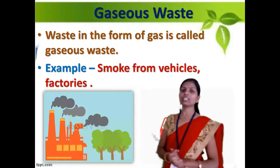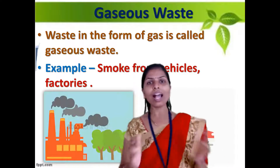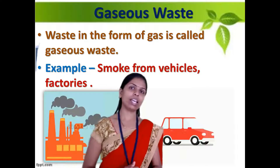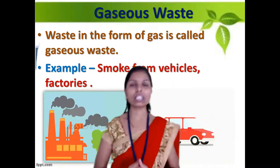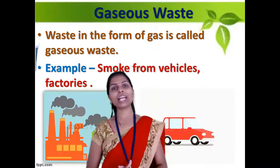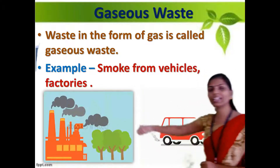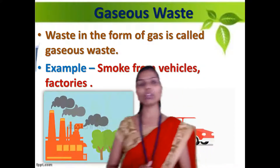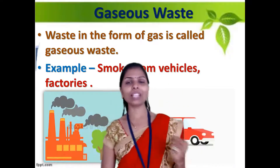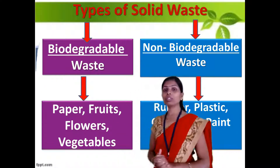The third type is gaseous waste. Waste in the form of gas is called gaseous waste. As you know, in our city there are many different types of industries and factories. Those industries and factories generate black smoke which contains harmful gases, and this comes under the category of gaseous waste. We can also see on the road many different types of vehicles generating dark smoke which also contains harmful gases, and that also comes under the category of gaseous waste.